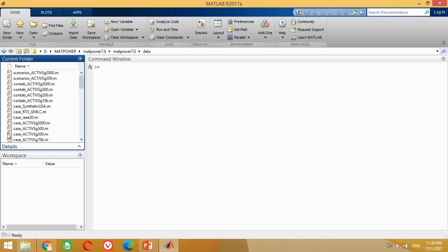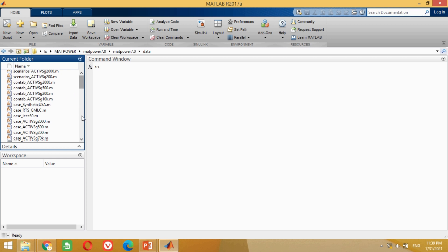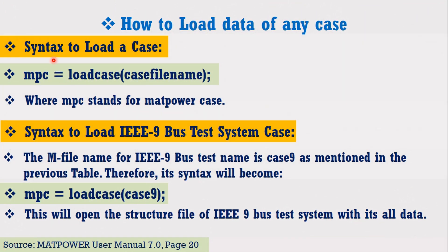Let's learn how to open the IEEE 9 bus MATLAB program and perform its load flow analysis using all three methods. In the first step, we should know how to load any particular case in MATLAB in order to see its data. The syntax consists of three acronyms: mpc which stands for MATPOWER case, loadcase which is a MATLAB power command, and the case file name which represents the name of the particular case. The MATLAB program name for the IEEE 9 bus system is case9. Therefore, to load the IEEE 9 bus system MATLAB program, the syntax becomes as shown here.